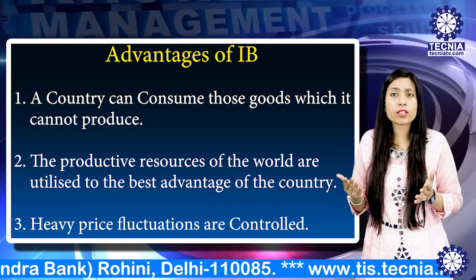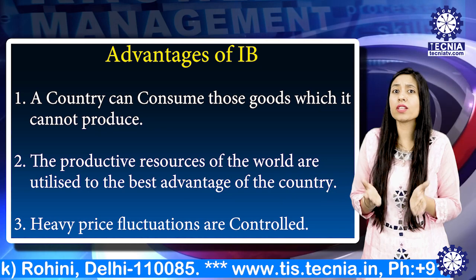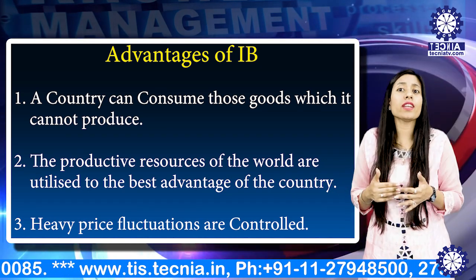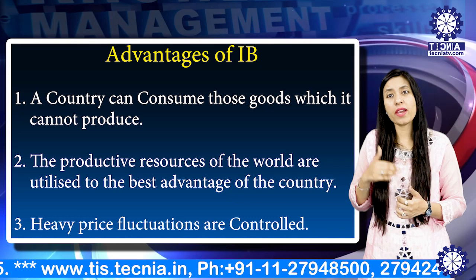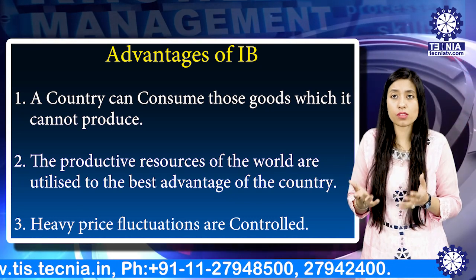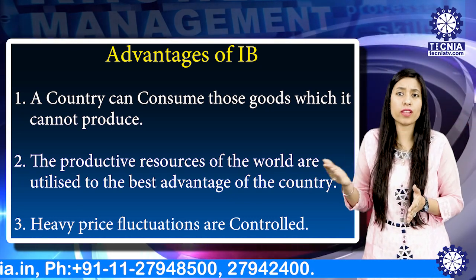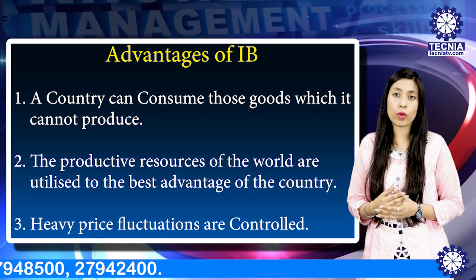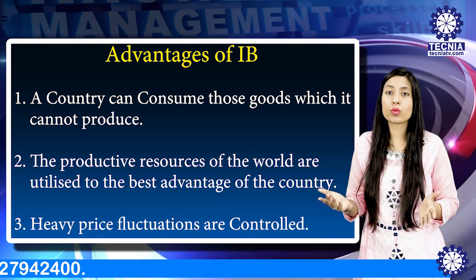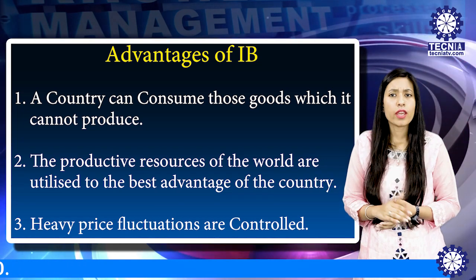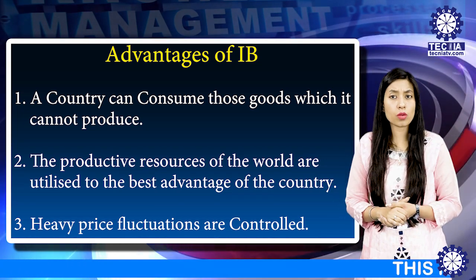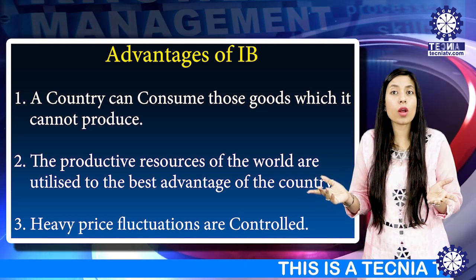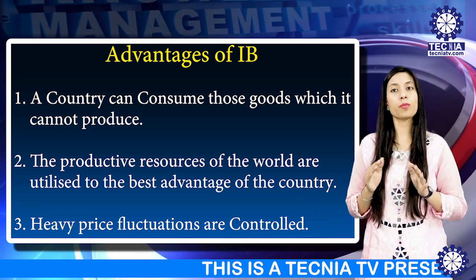The second advantage: the productive resources of the world are utilized to the best advantage of each country. Every country expects the highest return from its resources, and this leads to a fall in price and better goods for consumption. Third, heavy price fluctuations are controlled — if the price of any commodity goes up, goods can be imported from abroad and the price can be brought down.